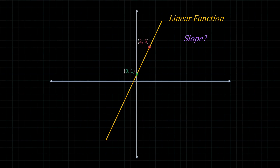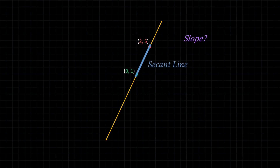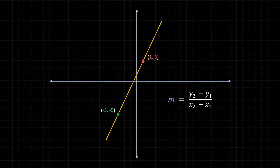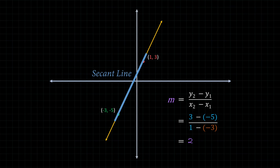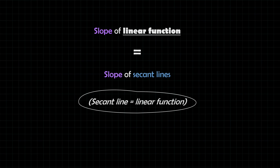For a linear function, how do we find the slope? We need to know two points and find the rise and the run between them, dividing rise over run to give us a slope — in this case, two. Alternatively, using the two points, we can plug them into the slope equation, where m represents slope. By plugging in the coordinates, we end up with the exact same slope. Since we're using two points, we're finding the slope of the secant line, so this is the average slope, which in this case is two. Notice the secant line looks identical to our actual linear function, and using different points yields the same slope.